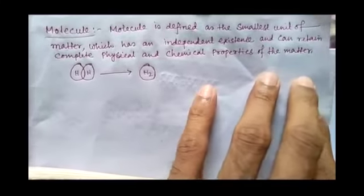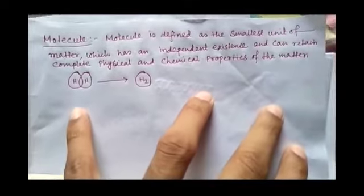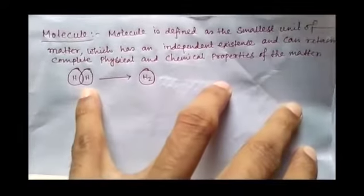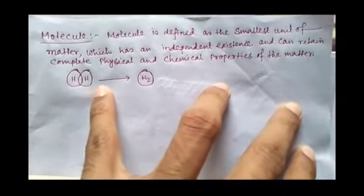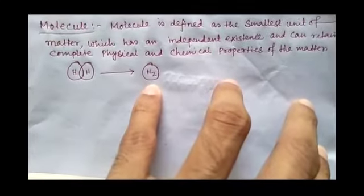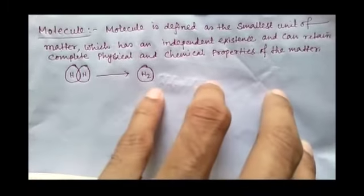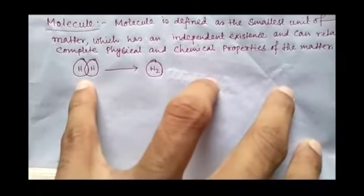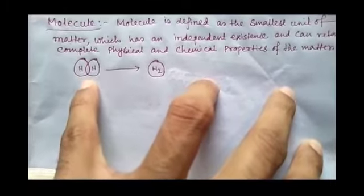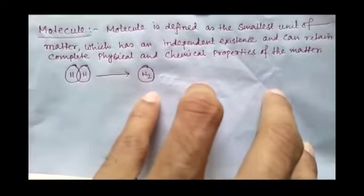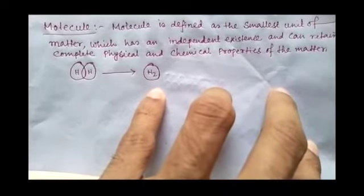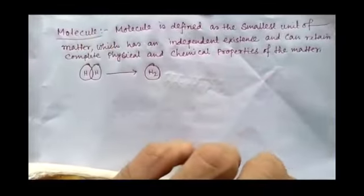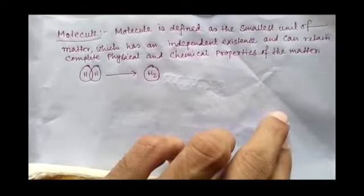Atoms combine to form molecules. Two hydrogen atoms when combined form a molecule, and this molecule is very stable. The hydrogen atom itself is not stable, but the hydrogen molecule is stable. So we can say that a molecule is the smallest unit of matter.